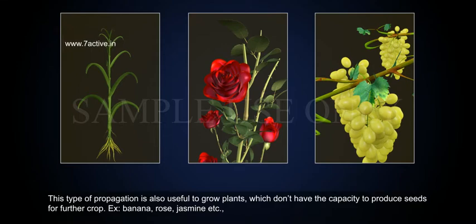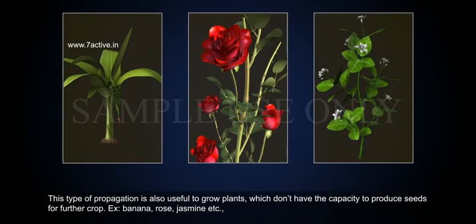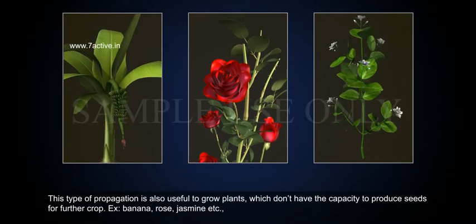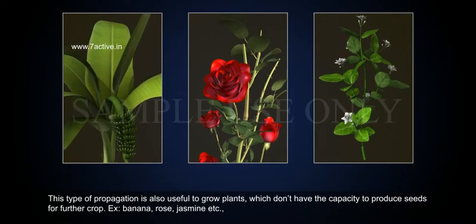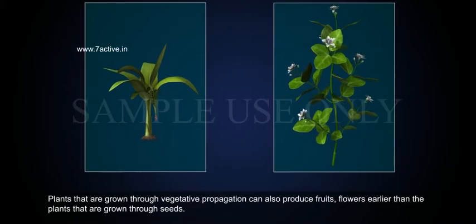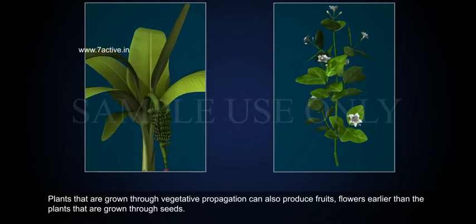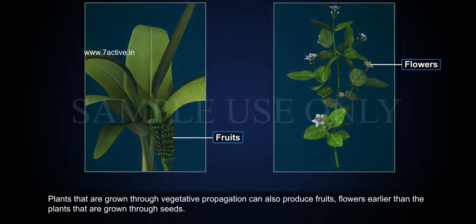This type of propagation is also useful to grow plants which don't have the capacity to produce seeds for further crop, e.g. banana, rose, jasmine, etc. Plants that have grown through vegetative propagation can also produce fruits and flowers earlier than the plants that are grown through seeds.